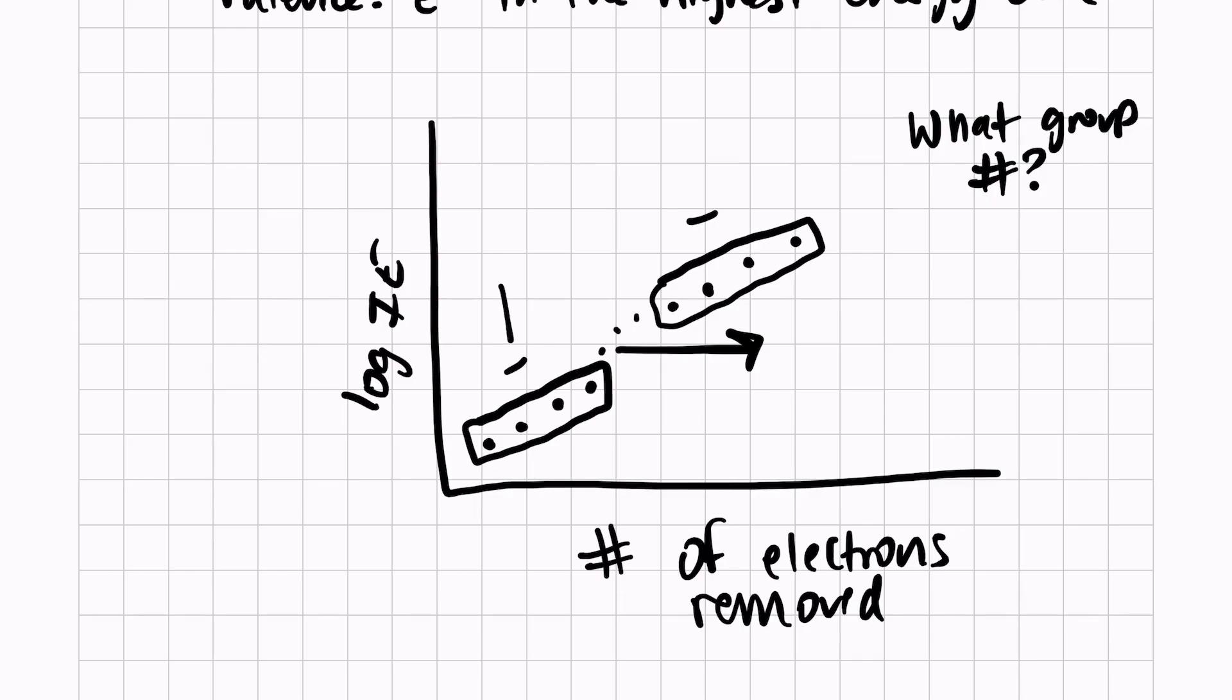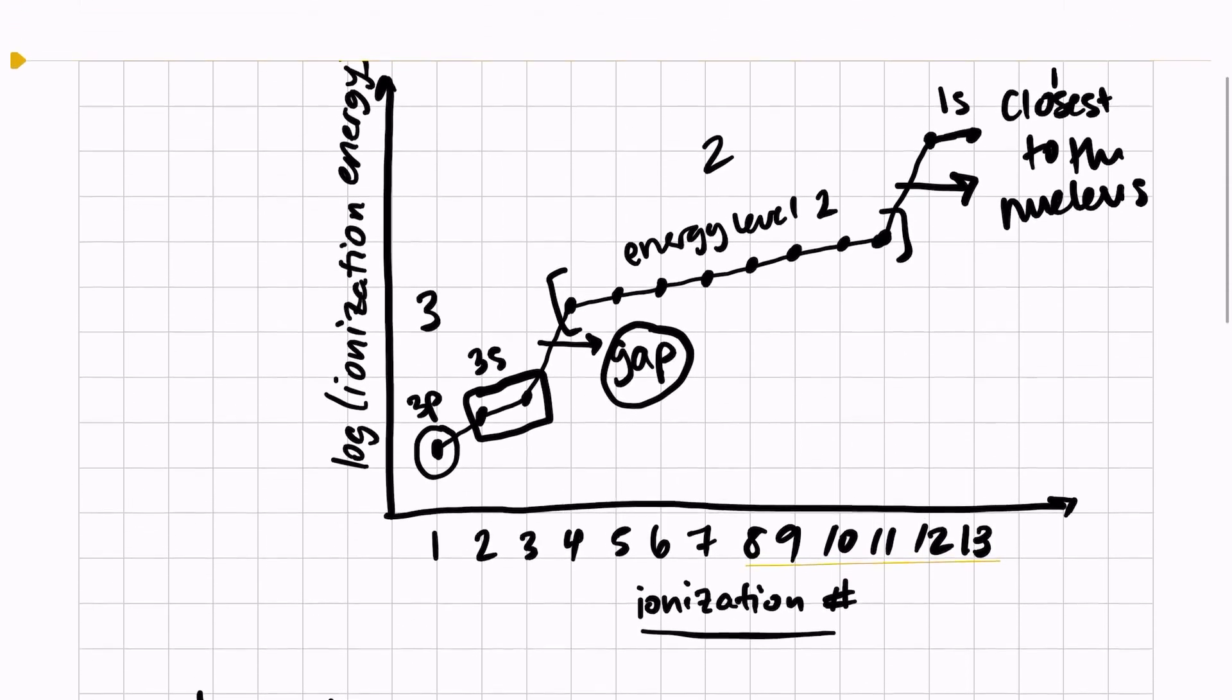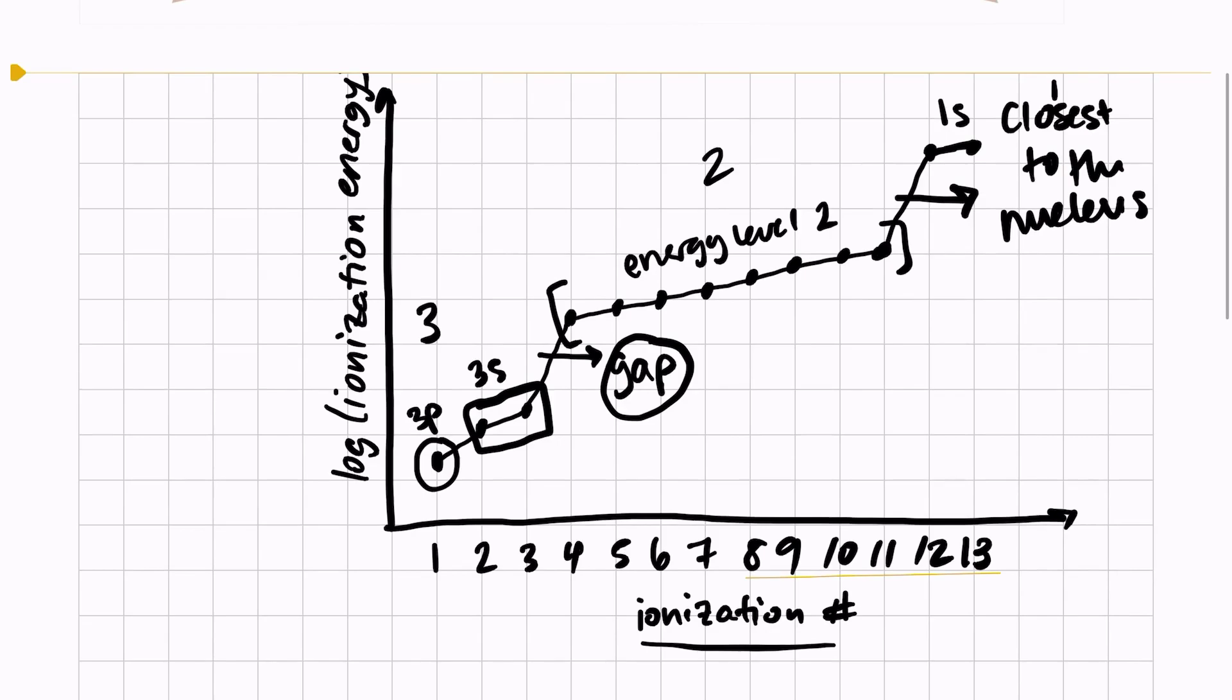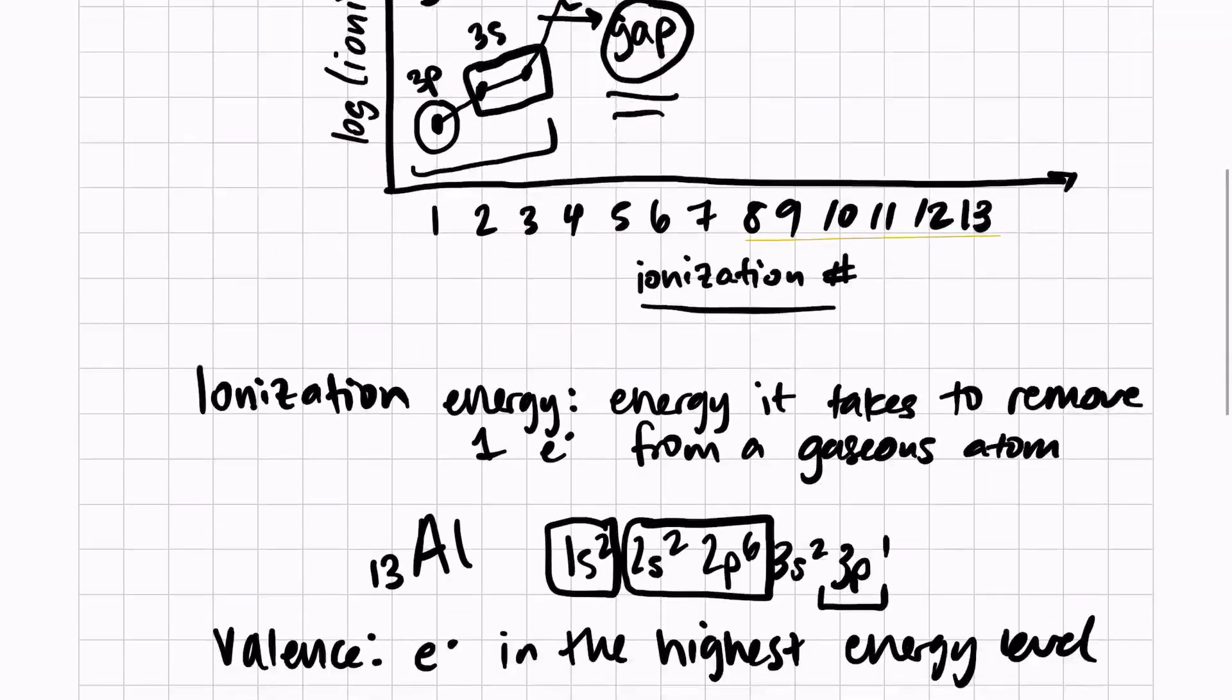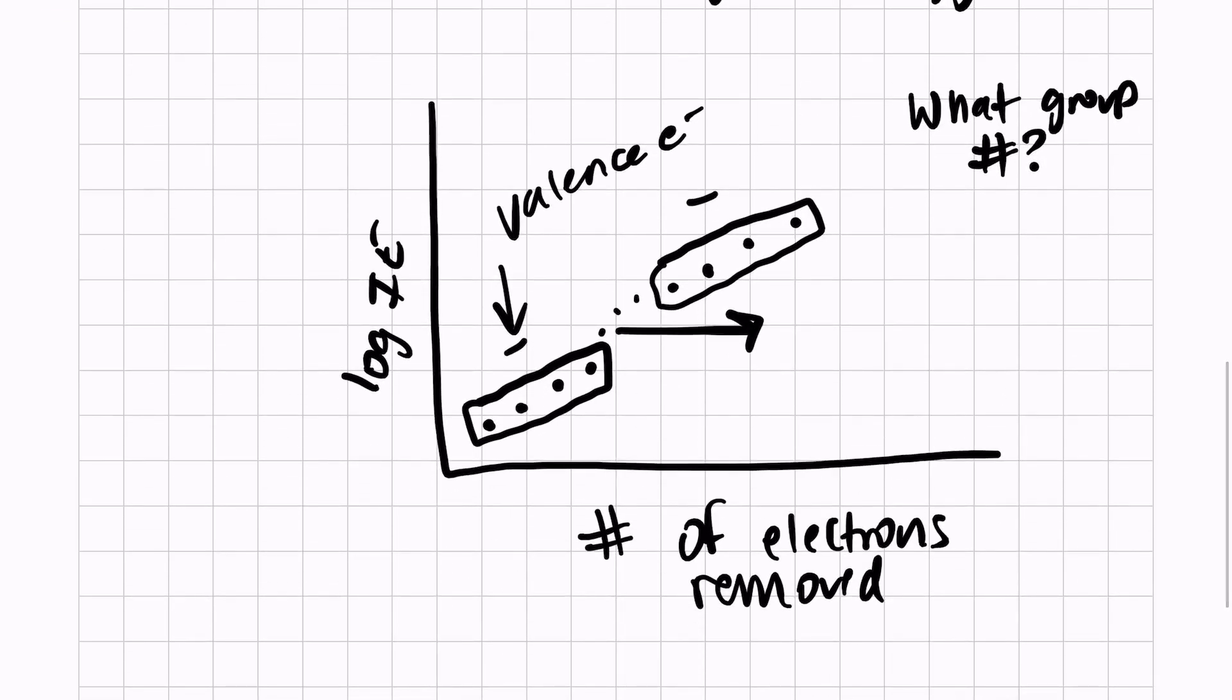If we look back up at aluminum's graph, we have our first three valence electrons, and then we have our giant gap in our graph. So these four should be the valence electrons. Again, I know there's four valence electrons, so if there are four valence electrons, this should be in group 14 on the periodic table.